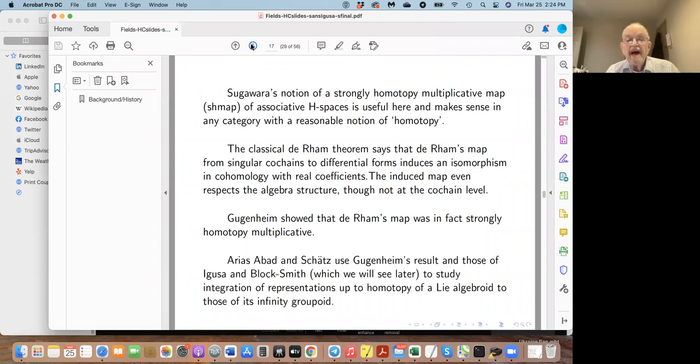More recently, Abad and Schätz used Guggenheim's result and those of Block-Smith, which we will see later, to study the integration of representations up to homotopy of a Lie algebroid to those of its infinity groupoid. If you don't know what those words are, it's not crucial. The emphasis will be on the various other ingredients, which I will keep talking about and will eventually get to.